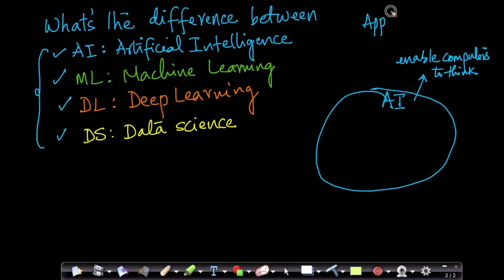And we named our course Applied AI course because we cover topics from across the spectrum. We cover topics from AI, machine learning, deep learning and data science. So AI is a very broad area.